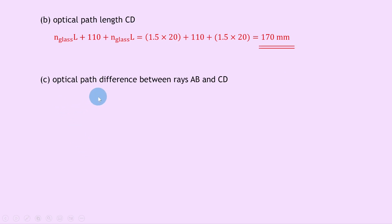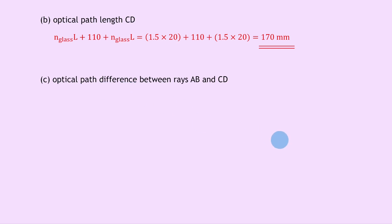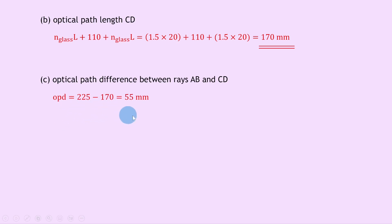Lastly, part C says to calculate the optical path difference between rays AB and CD. We've already calculated both optical path lengths, and the optical path difference is just the difference between the two. So optical path difference = 225 − 170 = 55 millimeters.